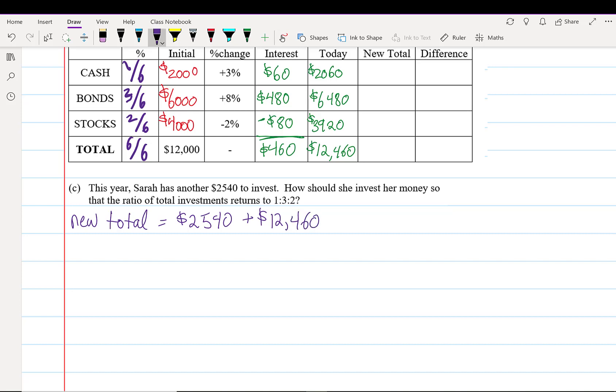When she invests her $2,540, she's going to add that to the $12,460 she already has, giving her a total of $15,000. So her new total is $15,000.